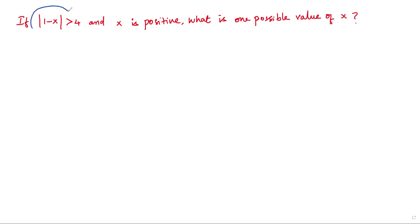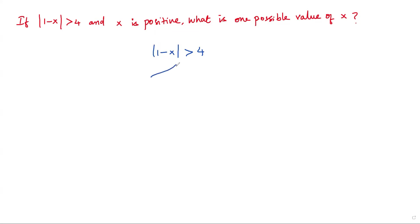We have to solve this absolute value inequality. Let me rewrite it: absolute value of one minus x is greater than 4. Whenever I want to solve an absolute value inequality, I have to take the expression inside the absolute value as it is and write it in two branches. So: one minus x, one minus x.